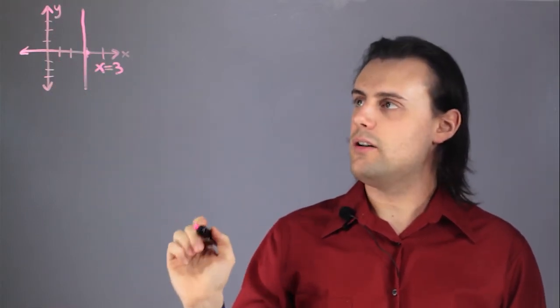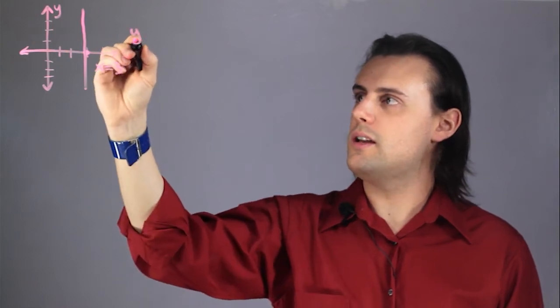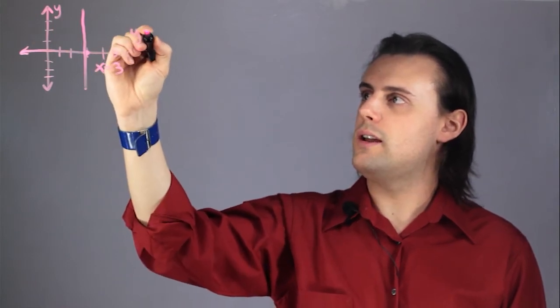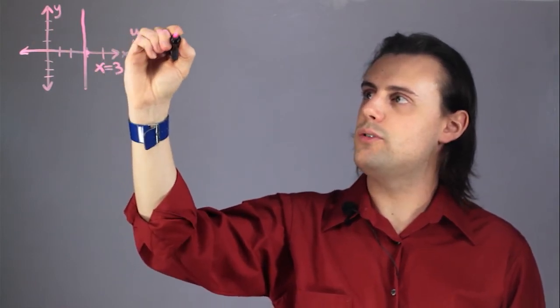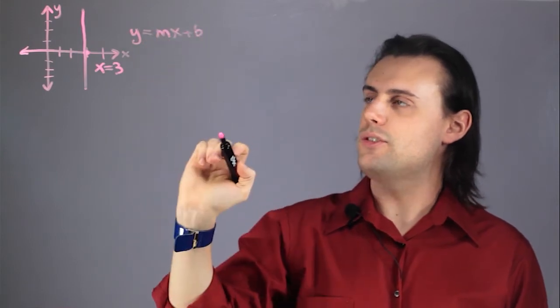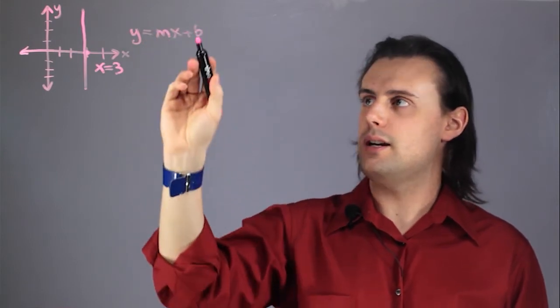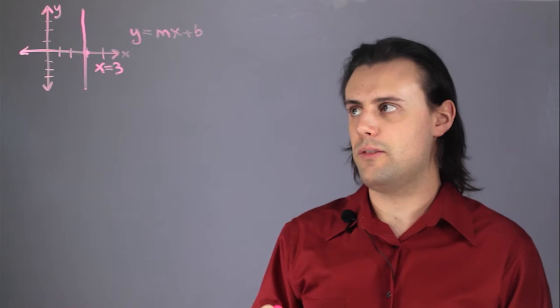A slope equation is typically written in the form y is equal to mx plus b, where m is the slope of the line and b is the y-intercept.